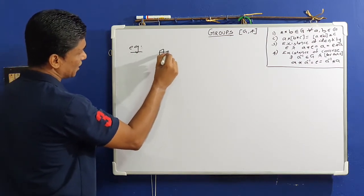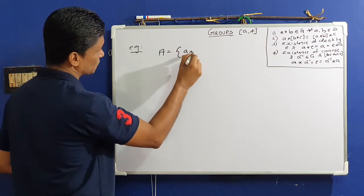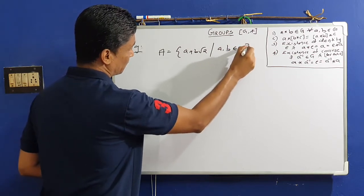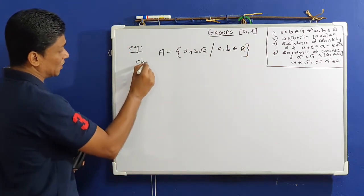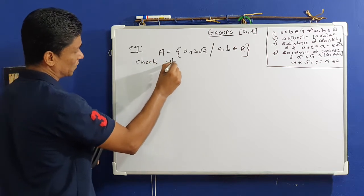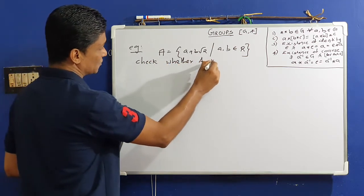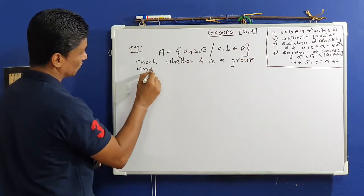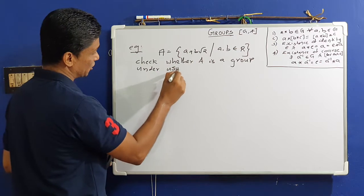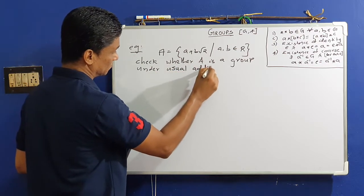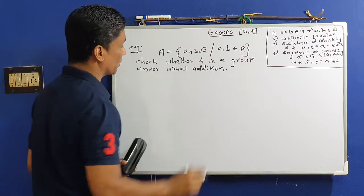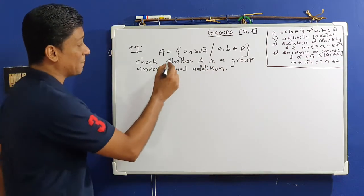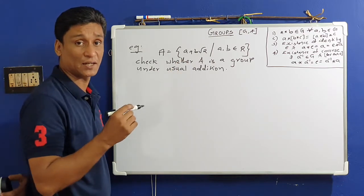Let A = {a + b√2 | a, b ∈ ℝ}. Check whether A is a group under usual addition. The set A contains all elements of the form a + b√2 where a and b are real numbers, and the operation star is the usual addition.